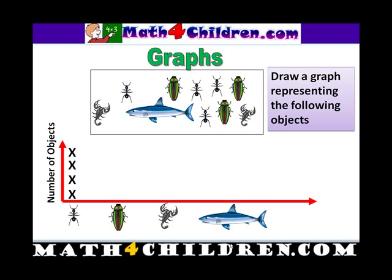We've got four cockroaches. Three, and we've got the scorpion. We've got two scorpions and one fish. And the graph looks like this.